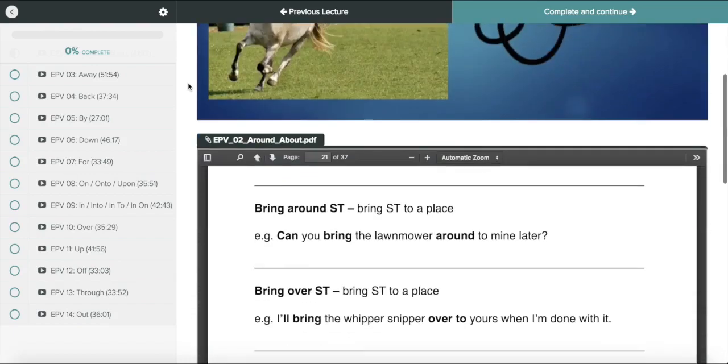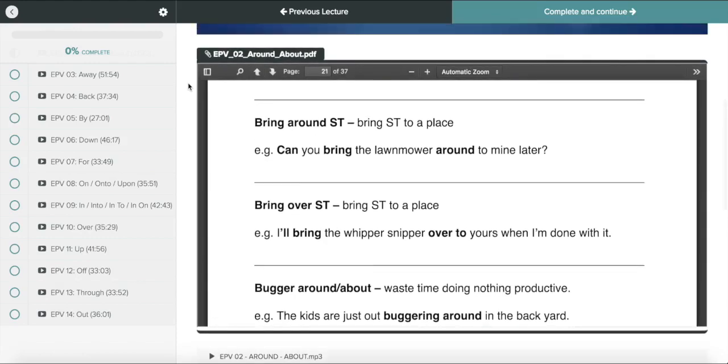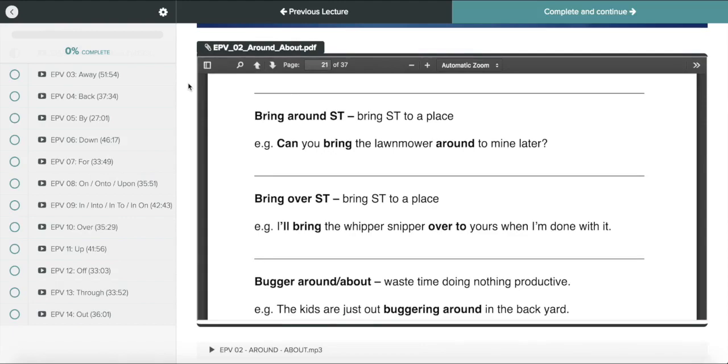You need to absorb this information and understand the patterns that underlie each one of these particles like away, back, by, down, etc. Once you understand and you have consumed this material, you've gone through the transcripts here, you've focused on the phrasal verbs and the concepts for particles that you found most difficult, you should be getting to the point where you can intuitively create your own phrasal verbs when speaking or writing. That is, you find the verb that you want to use and then you decide on the particle you want to use and you put them together to create a phrasal verb.